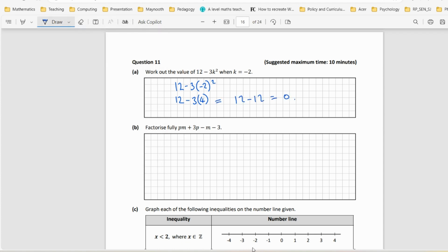Factorize fully the following. There's four terms here, so this is a grouping style of factorization problem. If you look at the first part, we could take a p out of both of those. So let's see what that leaves us with. If I take p out of that, I'll be left with n plus 3.